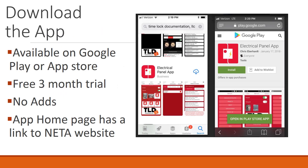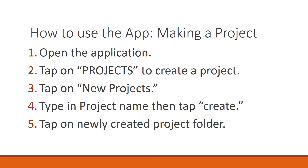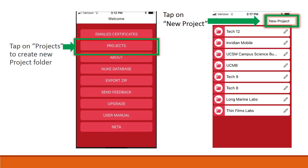How to use the app — making a project. Open the application. Tap on Projects to create a project. Tap on New Project. Type in the project name, then tap Create. Tap on the newly created project folder. Your new project folder has been created.